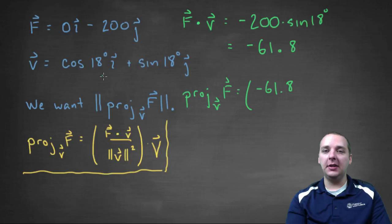Now this is really nice. V is a unit vector. Remember cosine 18i plus sine 18j. That's on the unit circle, so it has a magnitude of one. We're really dividing by one squared.